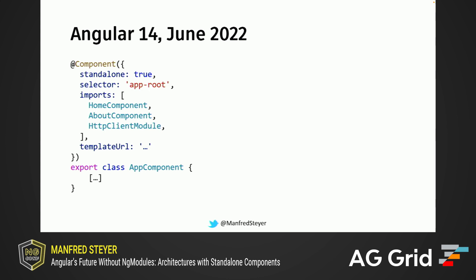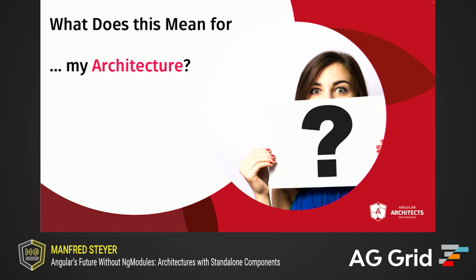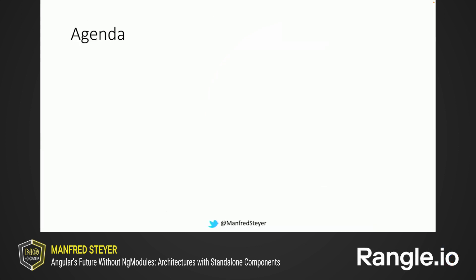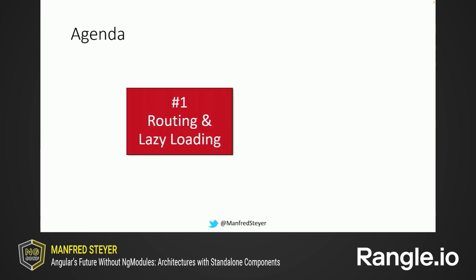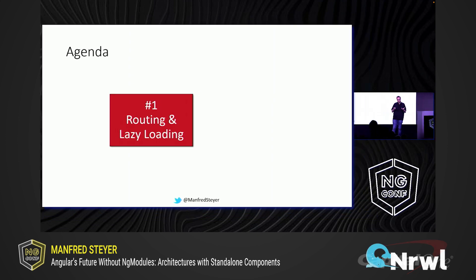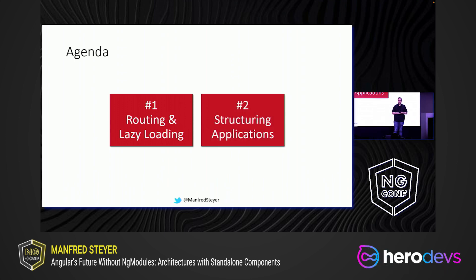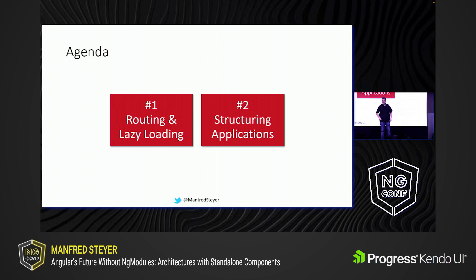However, this brings several additional questions to the table — questions like, what does all of this mean for my architecture? And this is what I want to answer here. I have prepared two parts. In the first part, I'm going to talk about routing and lazy loading. This topic is quite interesting because historically, routing and lazy loading was quite connected to ng modules. Besides this, the router is the linchpin of your application — it holds together all the parts and influences the architecture. The second part is about structuring your application with standalone components, or modularization without modules.